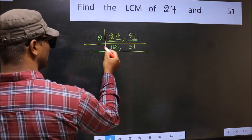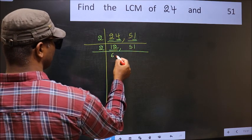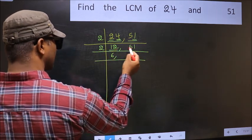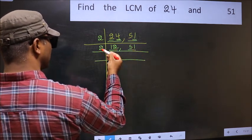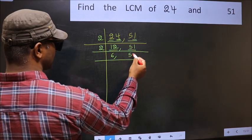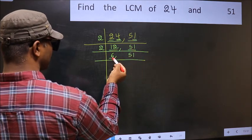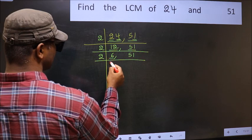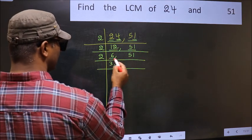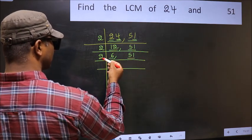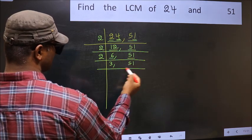Now here we have 12. 12 divided by 2 is 6, giving 12. The other number 51 is not divisible by 2, so you write it down as it is. Now here we have 6. 6 divided by 2 is 3, giving 6. The other number 51 is not divisible by 2, so you write it down as it is.